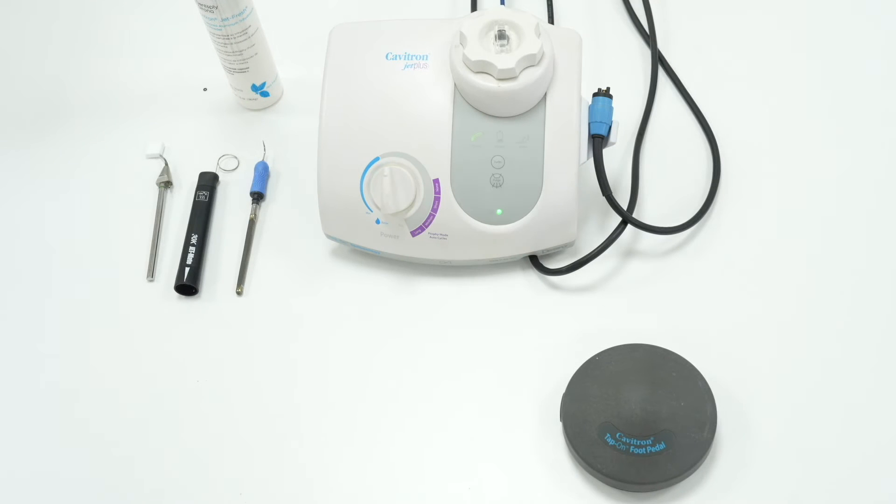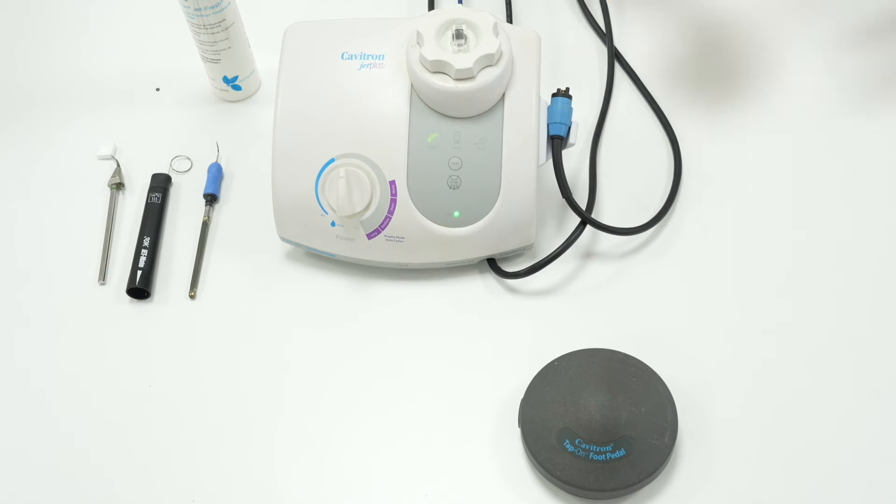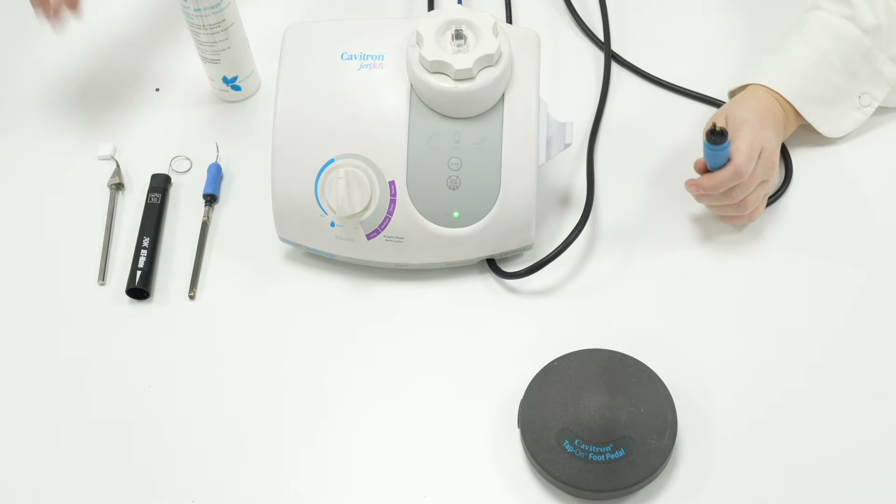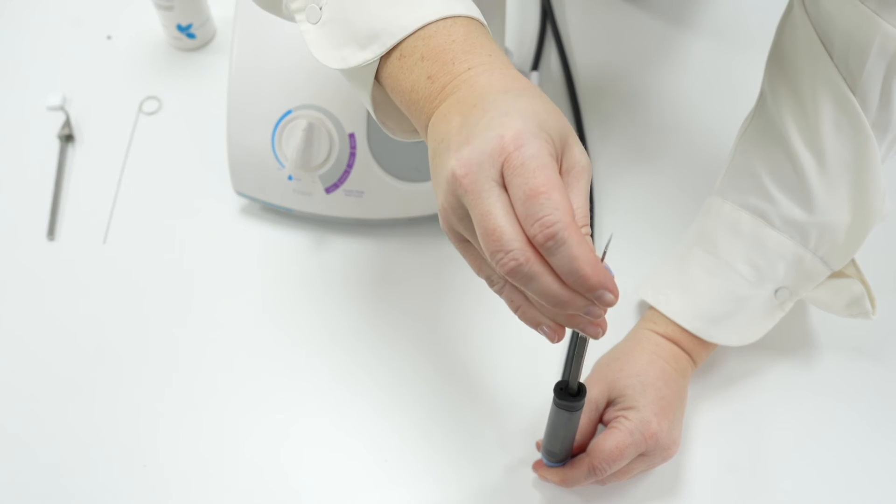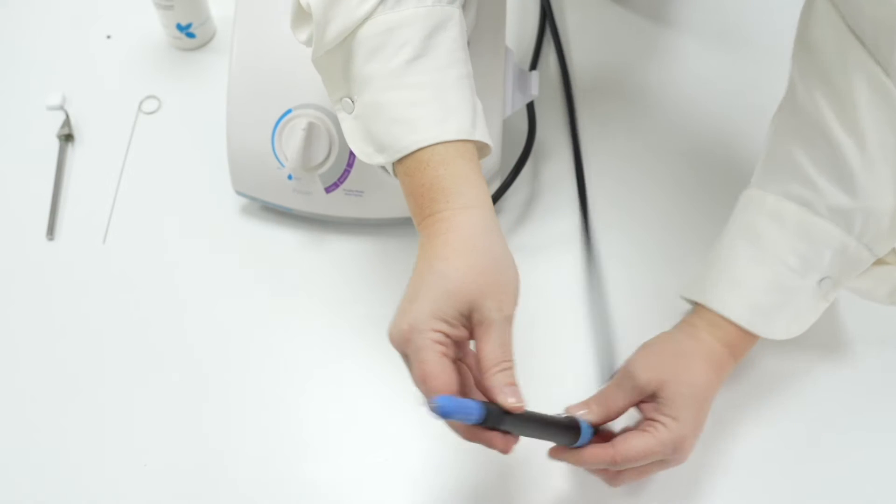So make sure not to remove the insert until the water has stopped, not when the foot pedal is pressed or you may cover your patient in water. When it is time to start scaling before inserting a Cavitron insert, fill up the JetMate while vertical until a bubble of water appears at the top and then drop the insert in.